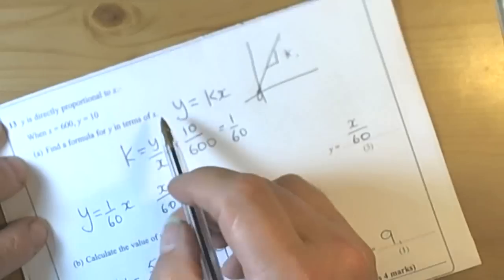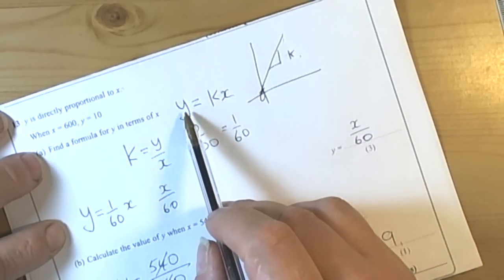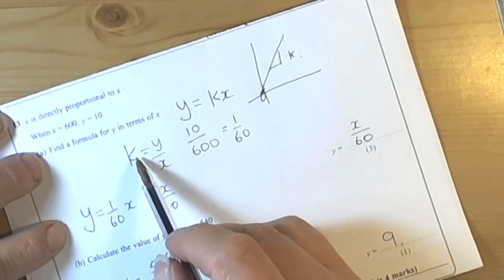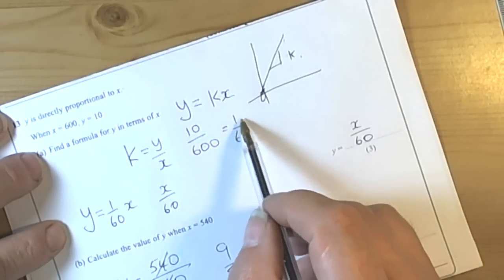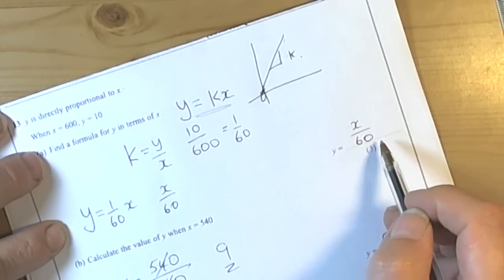So the key idea then is write down a formula. We're not sure what the constant is yet, so we can write it as y equals kx. Rearrange this to be k equals. Find the value of k. Put that back into the original formula. Gives you the answer.